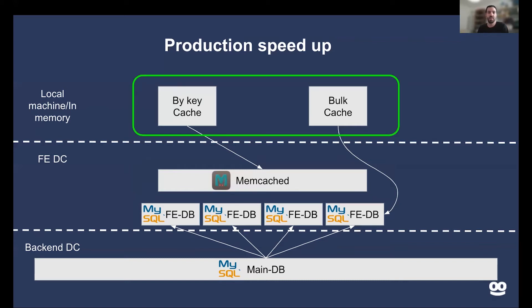However, our front-end recommender needs to weigh hundreds of thousands of campaigns in real time, so we also keep an in-memory cache of a working set in each service. There are two types: a bulk cache, used mainly for small tables, loading the entire table and refreshing it periodically in the background; and a by-key cache, where every key is assigned a certain TTL. Once the TTL expires, we go in the background to either Memcached or the database to fetch that information again. This reduces query time from sub-milliseconds to nanoseconds for in-memory cache reads.